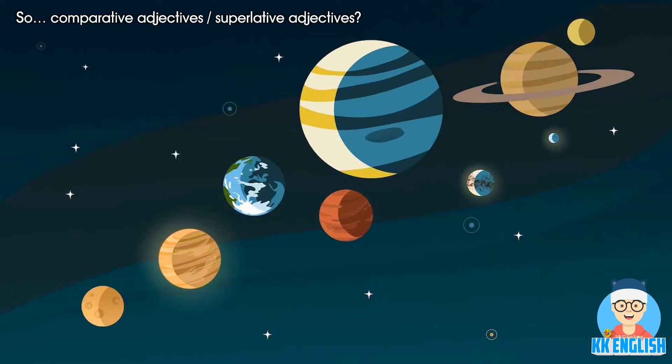So maybe you can give us some good ideas about what your solar system will look like. And before that, let us look at comparative adjectives and superlative adjectives.